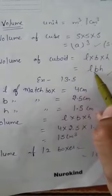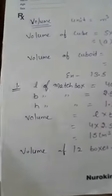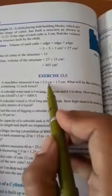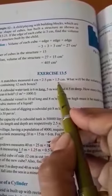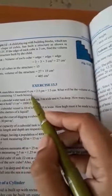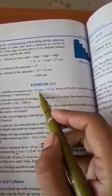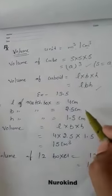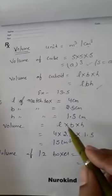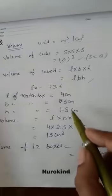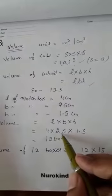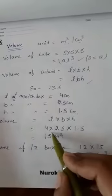Now let us start with exercise 13.5. First question: a matchbox measures 4 cm × 2.5 cm × 1.5 cm. What will be the volume of a packet containing 12 such boxes? Here we have to find the volume of 12 packets. For this, firstly we will find the volume of one box, that is l×b×h — length, breadth, and height of the matchbox. Volume = l × b × h, putting all values: 4 × 2.5 × 1.5.